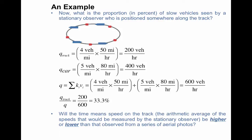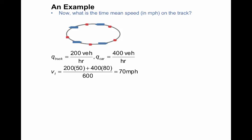So the next question says, will the time-mean speed on the track, which is the arithmetic average of the speeds measured by the stationary observer, be higher or lower than that observed from a series of aerial photographs? So using the logic that we just went over, you can see that because you're going to see proportionally more fast vehicles, then the time-mean speed is going to be higher.